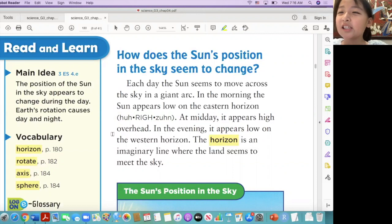How does the sun's position in the sky seem to change? Each day the sun seems to move across the sky in a giant arc. In the morning, the sun appears low in the eastern horizon. At midday, it appears high overhead. In the evening, it appears low on the western horizon. The horizon is an imaginary line where the land seems to meet the sky. Okay, good.